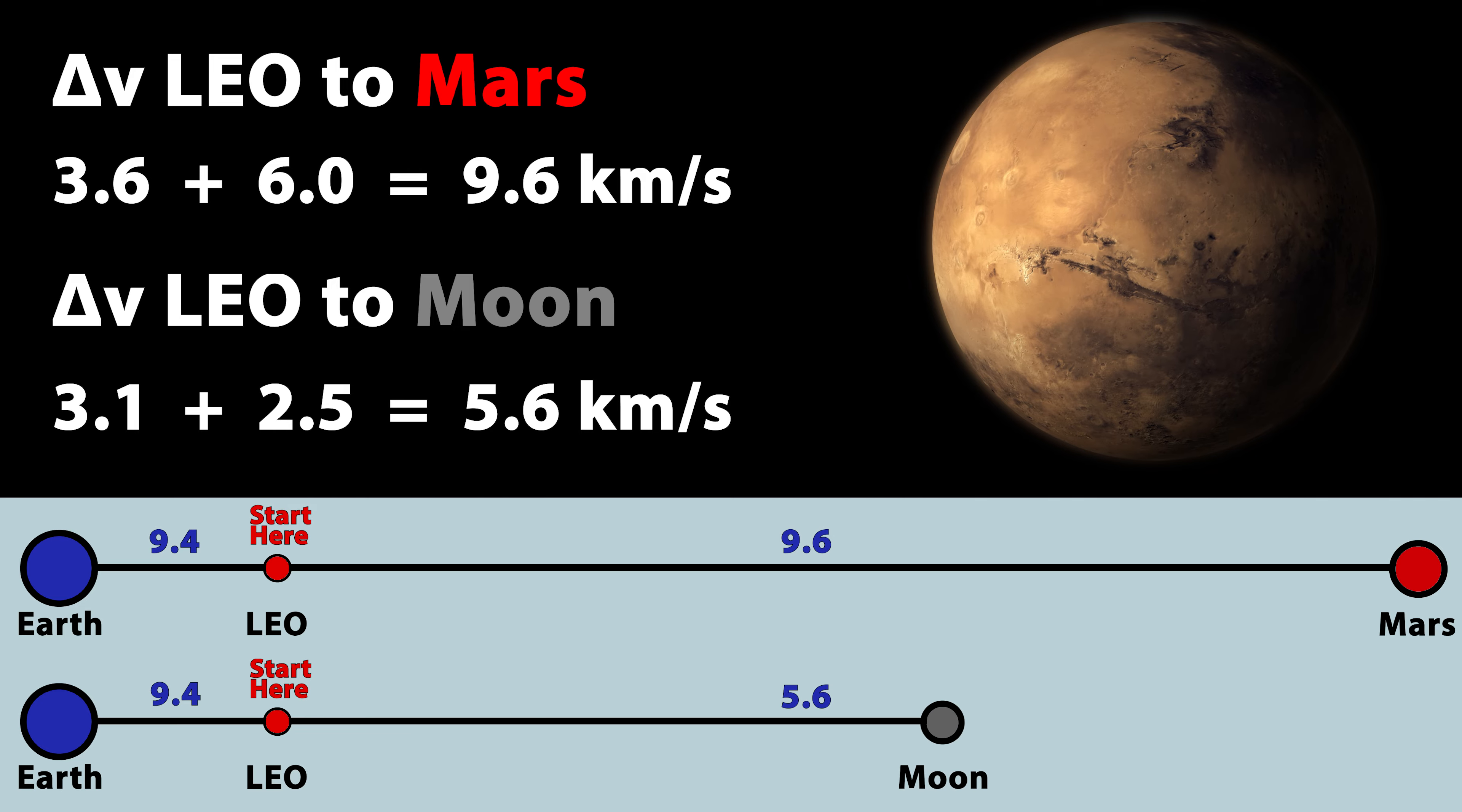Therefore, a total delta-v of 9.6 kilometers per second is needed to get from low Earth orbit to Mars, but only 5.6 kilometers per second is needed to get to the Moon.